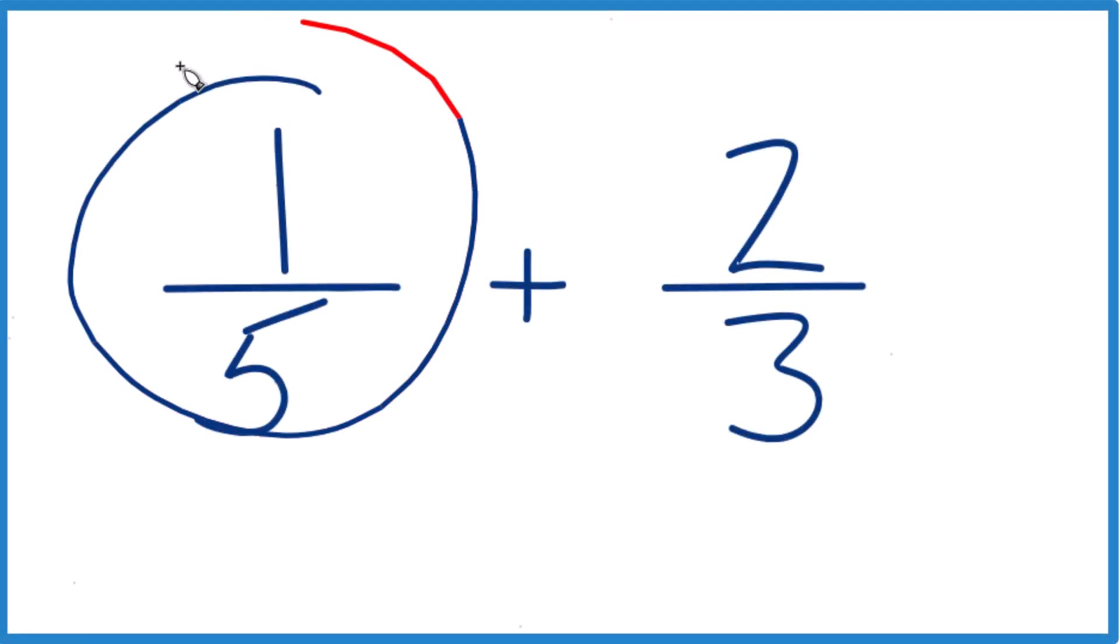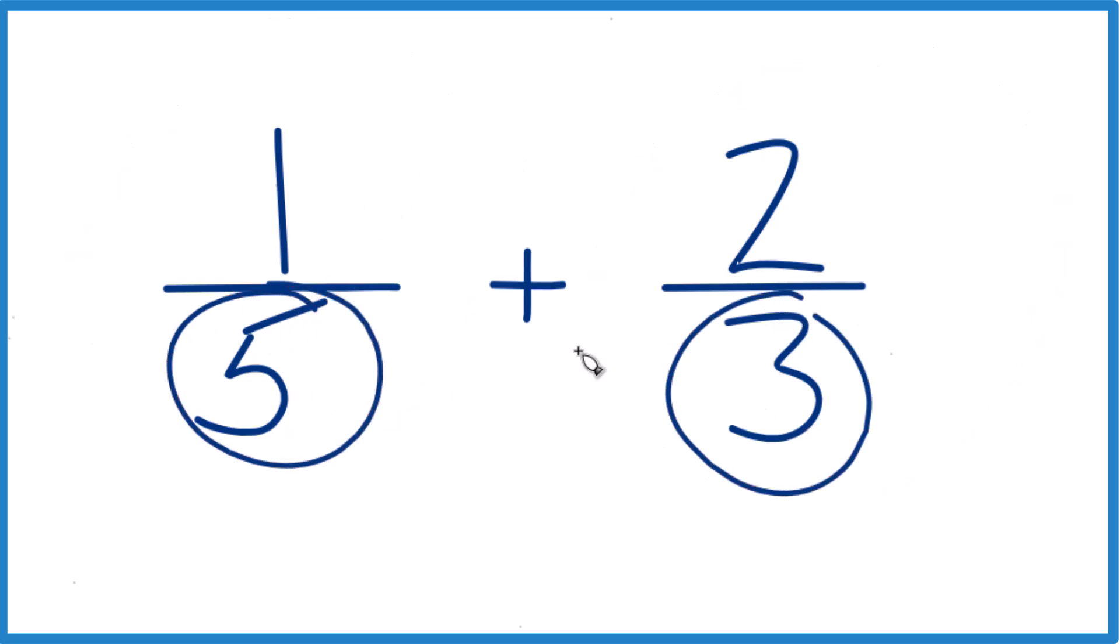If you need to add the fractions one-fifth and two-thirds, here's how you do it. So we need to get a common denominator. Right now we have five and three, but if we have the same denominator, we just bring that across, add the numerators, and we're done.